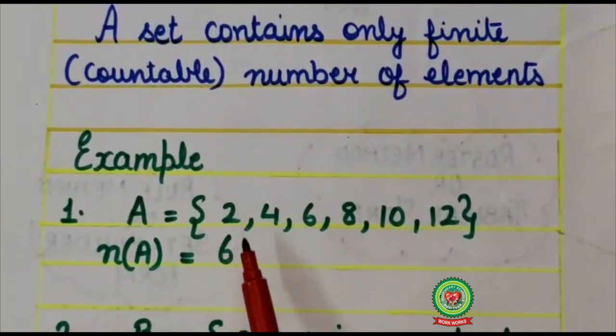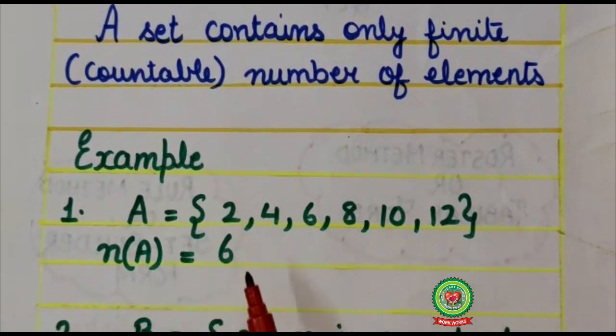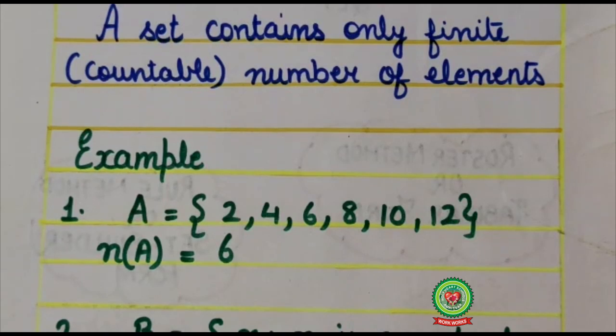Here set A is {2, 4, 6, 8, 10, 12}. Its cardinal number is 6. That means it is having only 6 elements. These are countable. So it is a finite set.